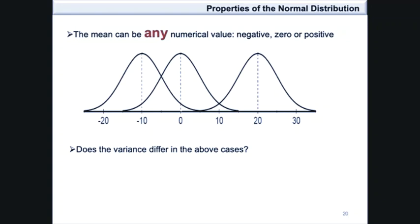The question that follows asks, does the variance differ in the above cases? In this case, it can be seen that the height of these three graphs is exactly the same. Therefore, the variance would be the same, as the height indicates that the variation is the same in all three graphs.